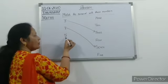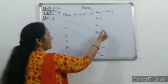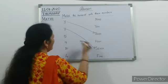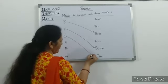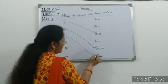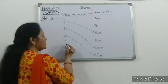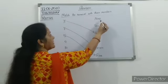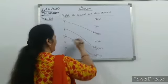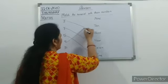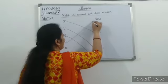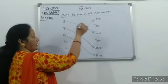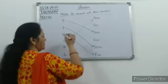Next numeral is 5. Where is 5? F-I-V-E 5. So you need to match 5. Next numeral is 9. Where is 9? N-I-N-E 9. So you can match their names — numbers, names.